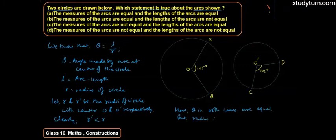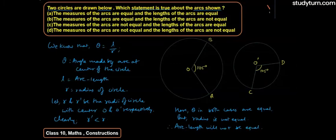But radius is not equal, और अगर radius equal नहीं है तो हम कह सकते हैं: therefore arc length will not be equal — क्योंकि theta अगर equal है और R equal नहीं है तो L भी obviously equal नहीं होगा। तो हमारा option होगा कि arc का जो measure है वो तो equal है but arc length equal नहीं होगी। So the measures of arcs are equal but the length of arcs are not equal — इसका मतलब जो B option है वो हमारा correct option हो जाएगा। Hence B is the correct option.